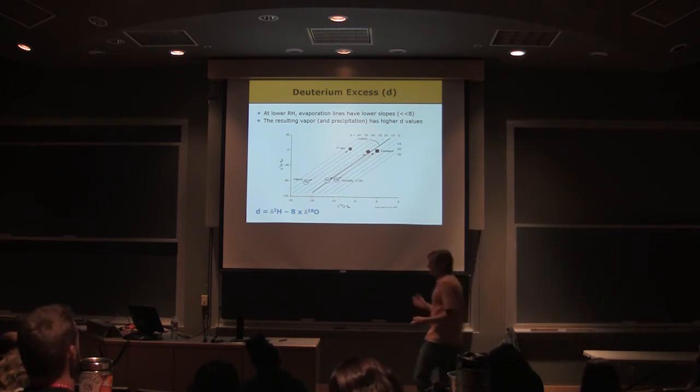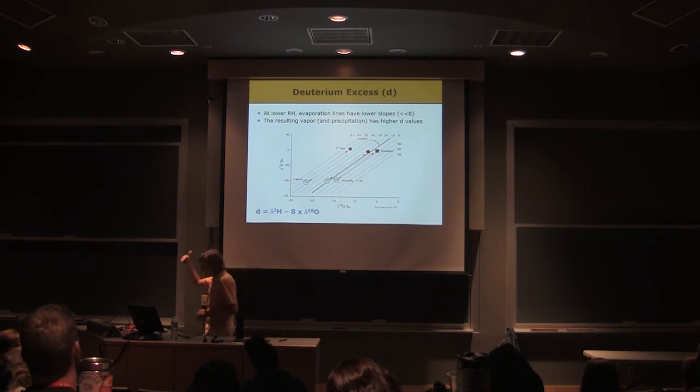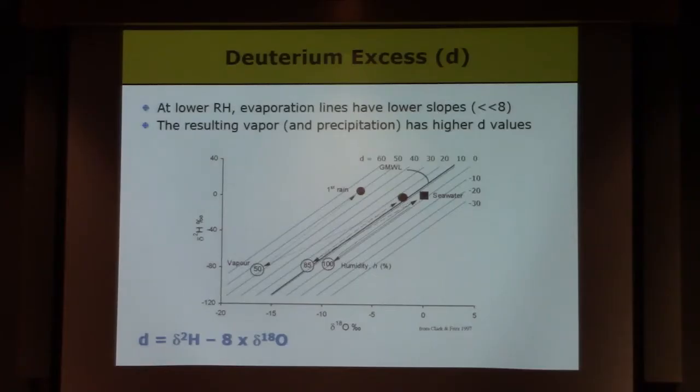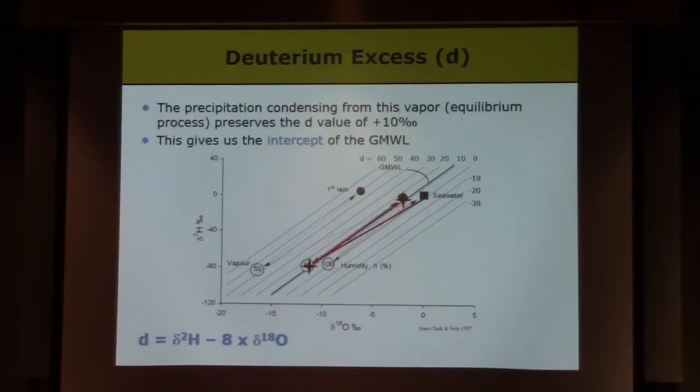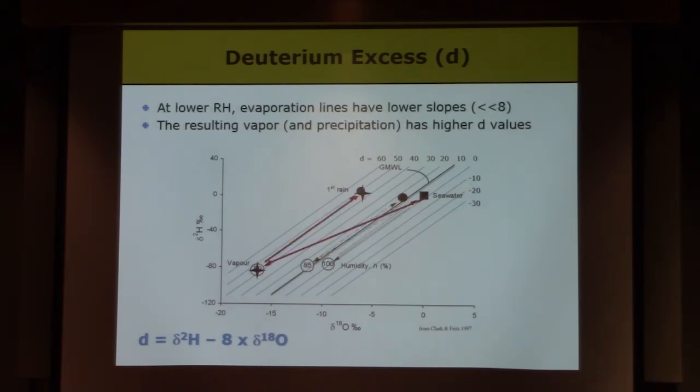What will change is that the evaporation of water into the atmosphere is going to happen under different conditions. And at a lower relative humidity, we're going to have a lower slope for the evaporation line. Okay, and that means the vapor we're producing back here on this end of the evaporation line is going to have a higher d-excess.